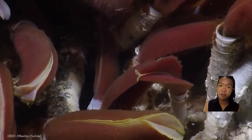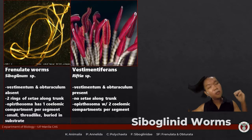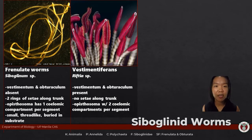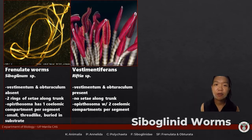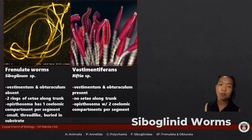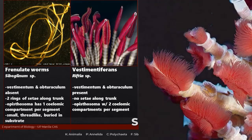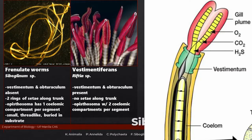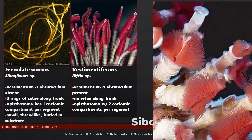To differentiate frenulates from vestimentiferans: frenulate worms do not have the vestimentum or obturaculum. Vestimentiferans have a branchial plume where the ciliated tentacles are found, a vestimentum which acts like a collar, and an obturaculum. These differences are mainly visible upon dissection — and realistically, these worms live at hydrothermal vents, so the chances of encountering them are slim.